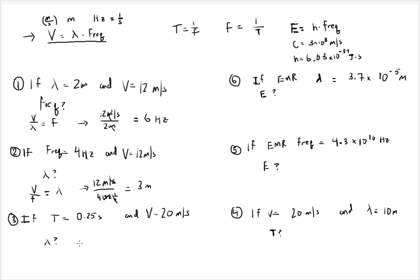Now if I use period instead — say you have a period of 0.25 seconds — you can either rewrite the equation using period by substituting 1 over period for frequency, since 1 over period is the same as frequency. Or you can just convert the period directly into frequency and plug it into the equation. Whatever works for you.